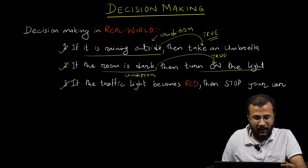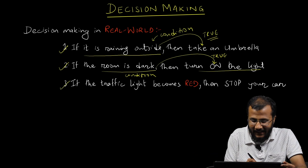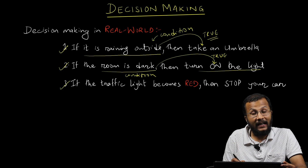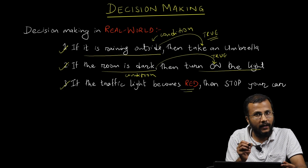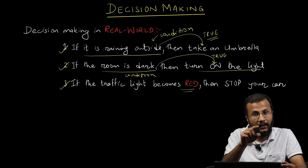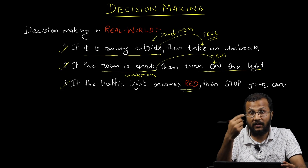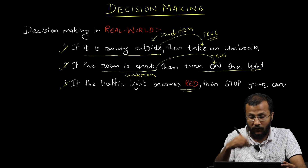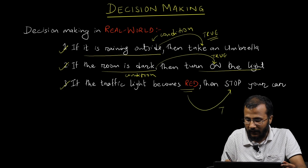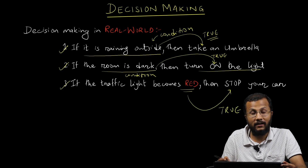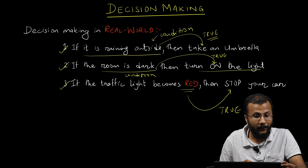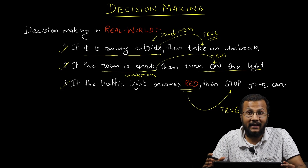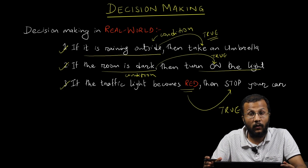The third example: if the traffic light becomes red, that is the condition. If it is red, you stop your car. These are some of the decision-making statements we encounter in our day-to-day life.